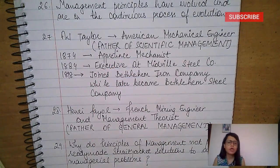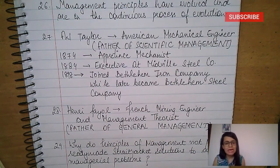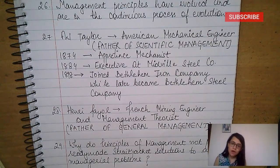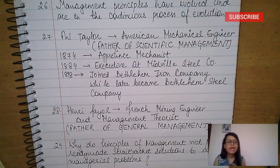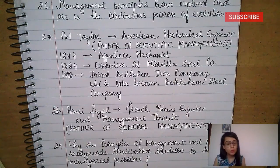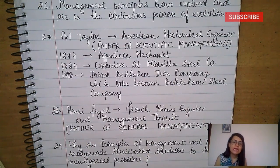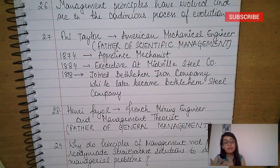F.W. Taylor was an American mechanical engineer, called the father of scientific management. In 1874, he started working as an apprentice. In 1884, he became an executive at Midvale Steel Company. In 1898, he joined Bethlehem Steel Company. Henry Fayol was the father of general management and a French mining engineer.